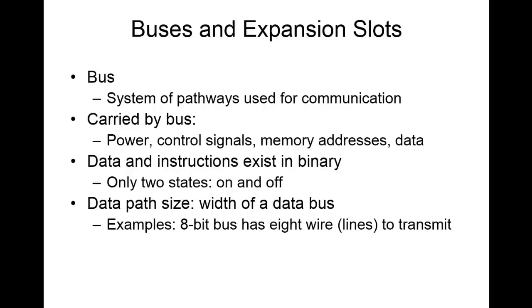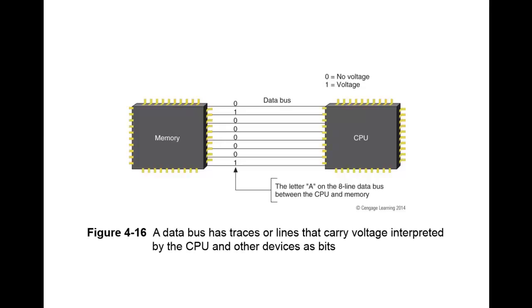How is the signal being carried across there? The data and instructions exist only in binary form — one or zero, on or off. The width of a data bus is called the data path size, sometimes called the data bus path size. Some buses have data paths that are eight or more lines long. If an eight-bit bus is needed, it's going to have eight wires or lines. Using this figure, you can see an eight-bit bus between the CPU and memory transmitting the letter capital A, whose binary form is 01000001. All bits of a byte are placed on their lines of the bus at the same time.